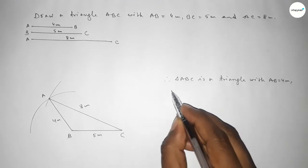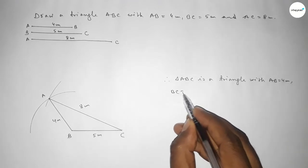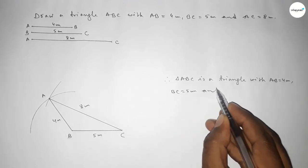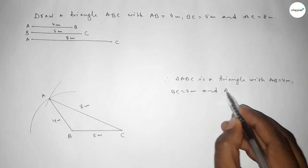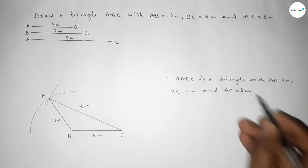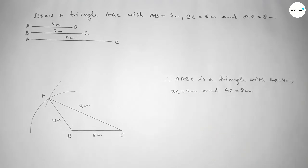Therefore, triangle ABC is constructed with AB equal to 4 centimeters, BC equal to 5 centimeters, and AC equal to 8 centimeters. That's all — thanks for watching. If this video is helpful, please share it with your friends.